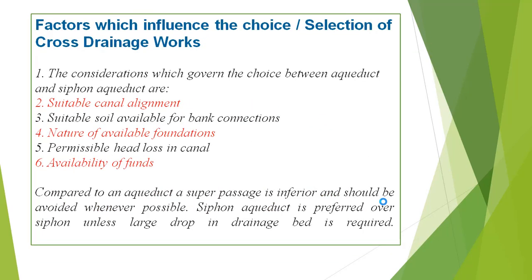The factors which influence the choice or selection of cross-drainage work include: suitable canal alignment, suitable soil available for bank connection, nature of available foundation, availability of funds, and the permissible head loss in the canal.